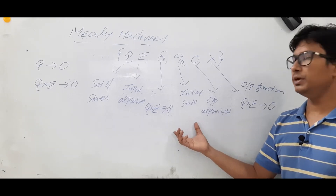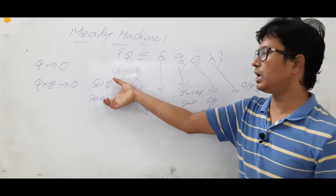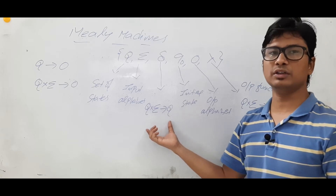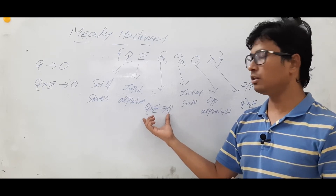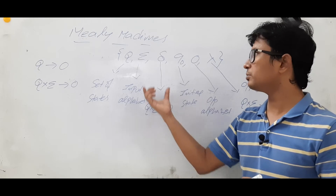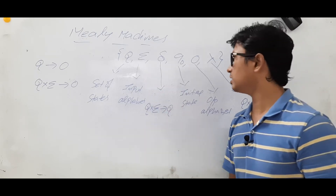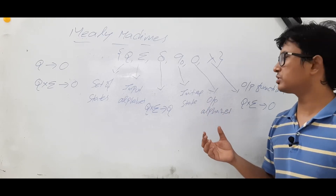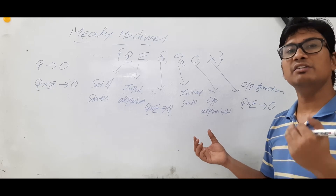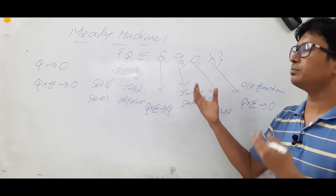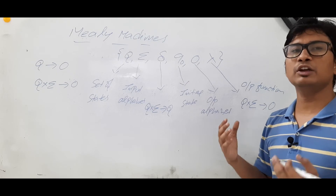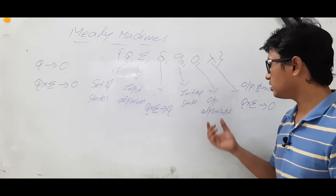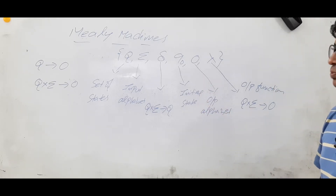So this is the Mealy machine representation. You will have a set of states, input alphabets, and a transition function following deterministic finite automata. The transition function of a DFA and Mealy and Moore machines is the same. You will have only one initial state, and you don't have any final states. Final states exist in DFA, but in Mealy and Moore machines the focus is on generating output, not on whether the string is accepted.